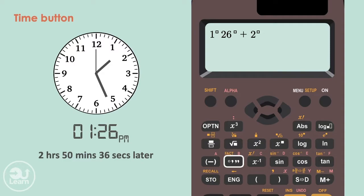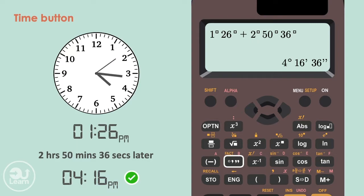2, time button, 50, time button and 36, time button. Pressing equals gives us the answer 4:16 pm and 36 seconds. In case you didn't believe me, let's have a look at this clock. 2 hours added takes us to 3:26. Adding 50 minutes takes us to 4:16. And then finally 36 seconds takes us to 36 seconds.